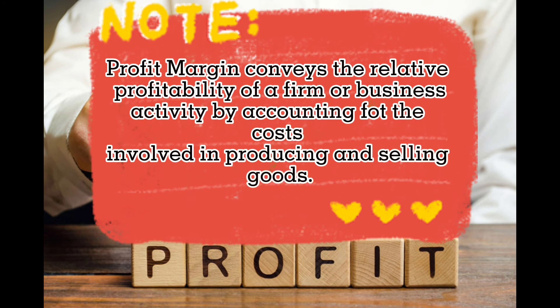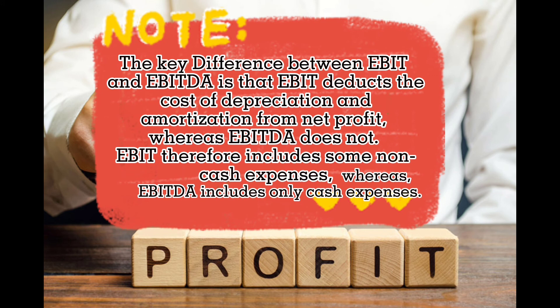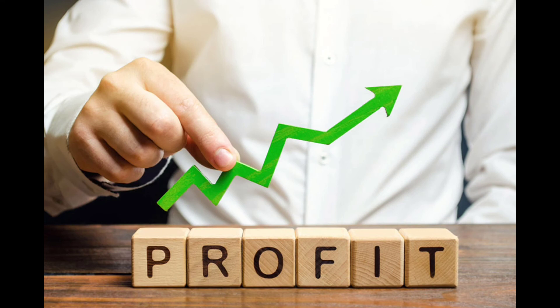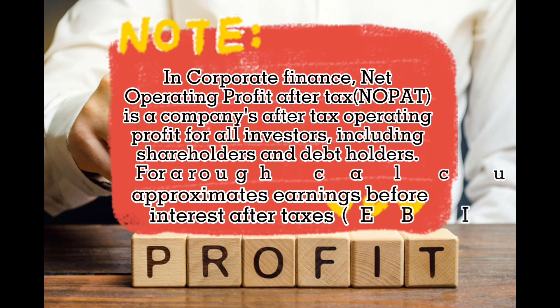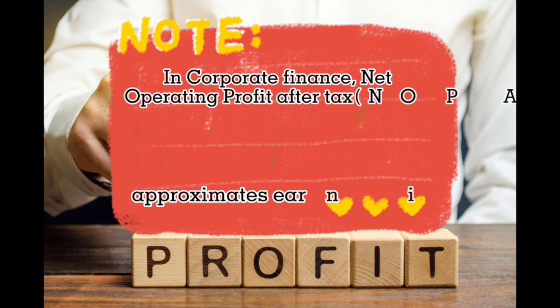To summarize: profit margin conveys the relative profitability of a firm or business activity by accounting for the costs involved in producing and selling goods. The key difference between EBIT and EBITDA is that EBIT deducts the cost of depreciation and amortization from net profit, whereas EBITDA does not — so EBIT includes some non-cash expenses, whereas EBITDA includes only cash expenses. In corporate finance, NOPAT is a company's after-tax operating profit for all investors including shareholders and debt holders, and it approximates earnings before interest after taxes, or EBIAT. That's all, and I hope you learned something from today's discussion. Take care and God bless!